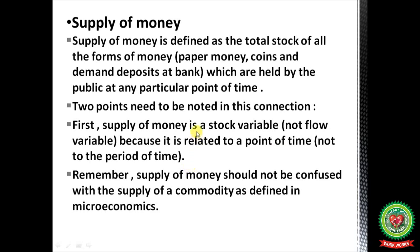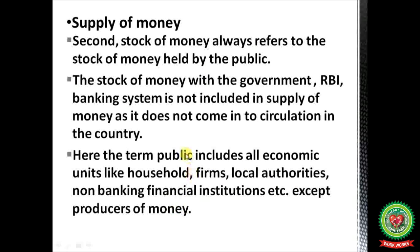If extra money printed by the RBI is lying with the banks only and is not in circulation, it is not part of money supply. When there is demand for more money, the RBI can increase money supply by lowering the rate of interest and reducing taxes on income. Note that supply of money should not be confused with the supply of a commodity as defined in microeconomics. Second, the stock of money always refers to money held by the public — not money lying idle with the government or the RBI — as that does not come into circulation.